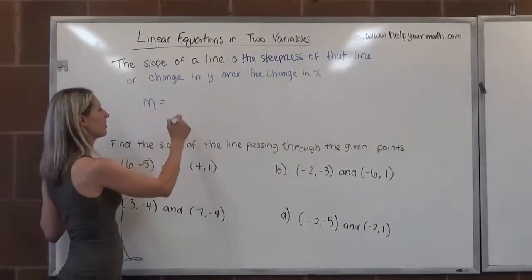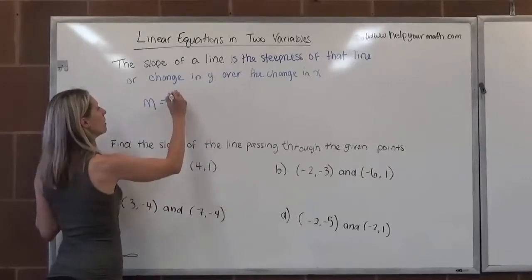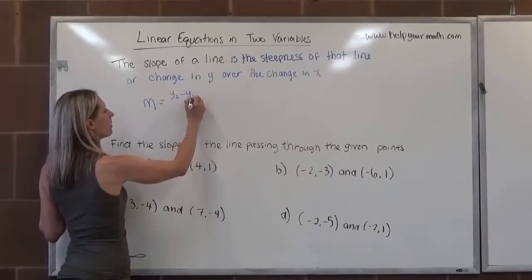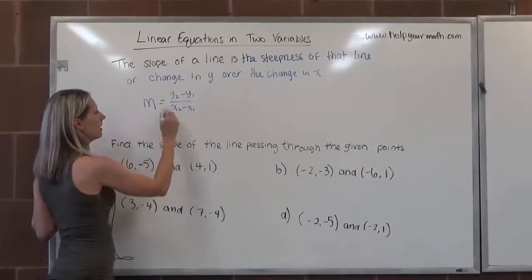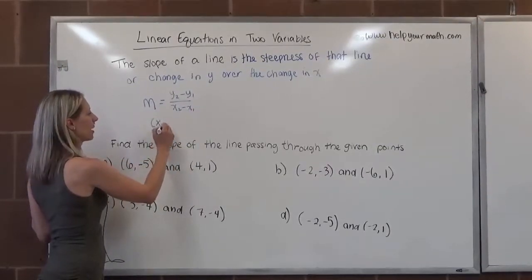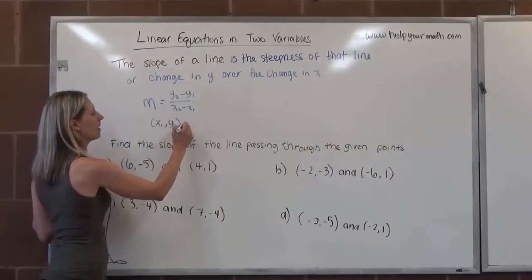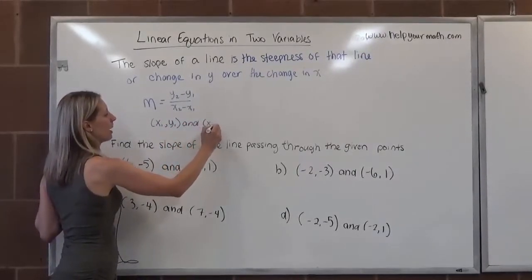So we say that the slope, if we're given two points, then we use the formula y2 minus y1 over x2 minus x1. And this is just saying that we have two ordered pairs. One ordered pair is x1, y1, and the second ordered pair is x2, y2.